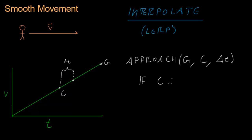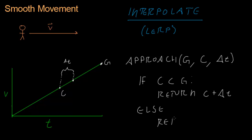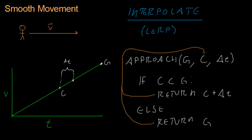Let's block out a simple version of this function. We're going to say: if the current value is less than the goal value, then we'll return the current value plus whatever the delta is. Otherwise, the current value is not less than the goal value, so we've reached our goal and we'll just return G. The return value from here gets fed back into the approach function on the next frame of the game loop. So we'll be here, then here, then here, incrementally, until we finally reach the goal — giving us that nice smooth interpolation.